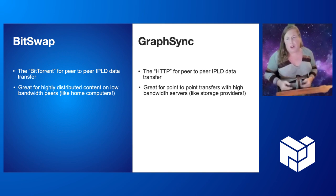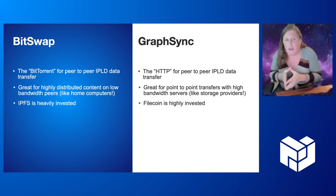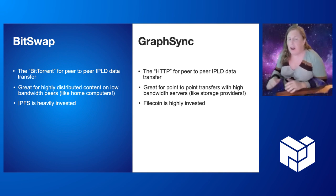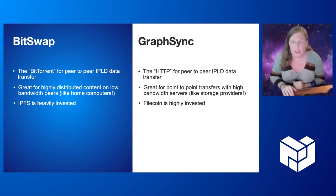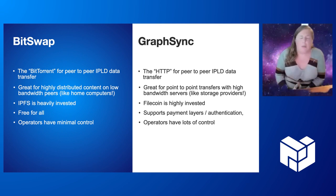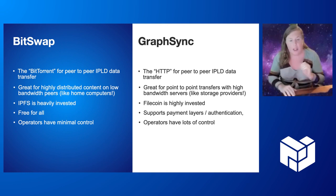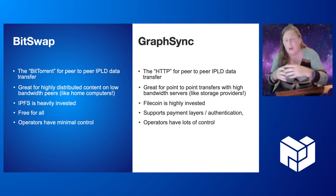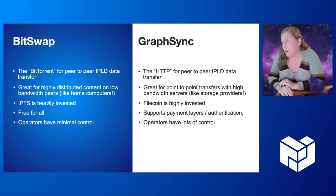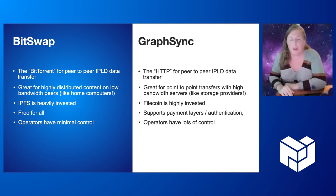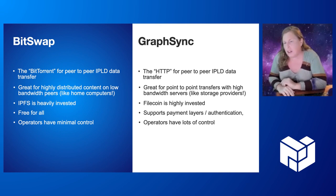The other big difference between the protocols is a historical artifact of how they were built. BitSwap is the bread and butter of IPFS, while GraphSync was written in the course of Filecoin development. This has led to some big differences in the implementations we produce. These aren't differences inherent to the protocol, but they're nonetheless quite significant. GoGraphSync supports layers for payments and authorization, while GoBitSwap keeps everything free. GoGraphSync provides multiple layers of control to operators, while GoBitSwap has a lot less configurability.